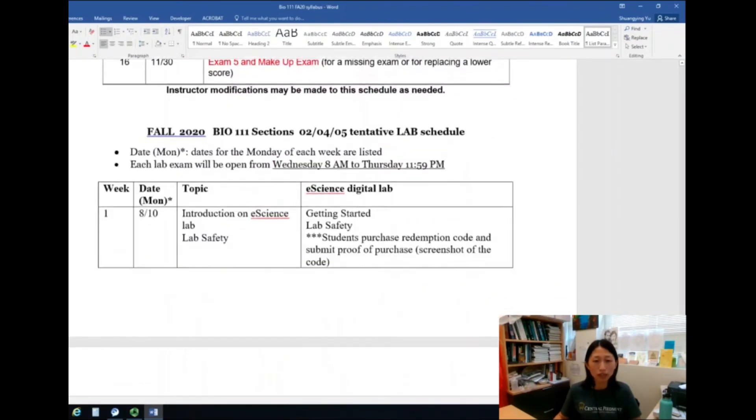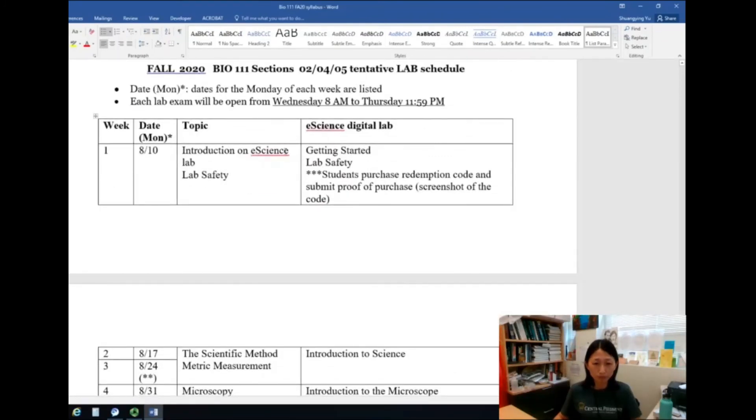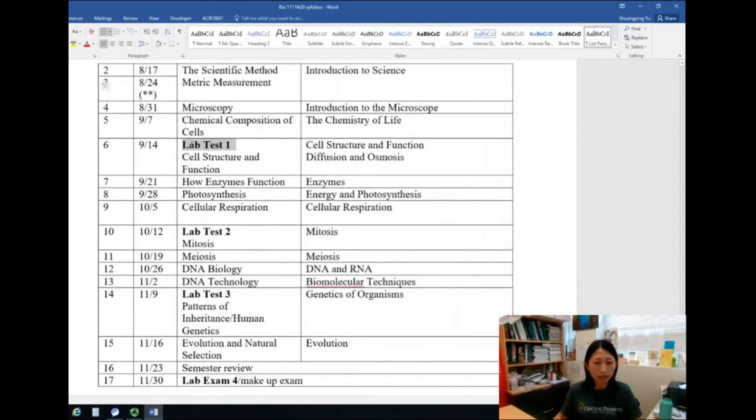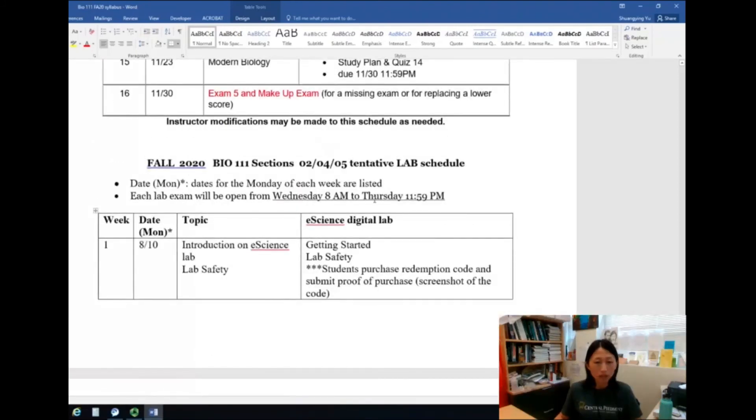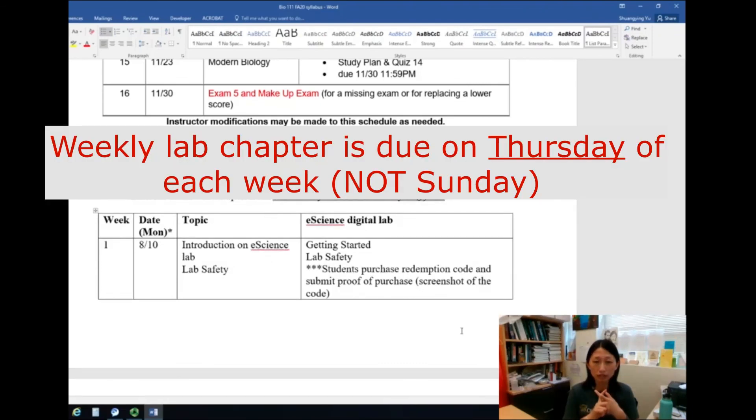So this is lecture. Now we're going to move on to the lab. So this is lab schedule. So similarly, the lab tests are in bold. You can see over here. I should have put them in red. You can do it yourself if you want to. I guess I didn't highlight them in red. So the lab test is also open for two days. So each test will be open from Wednesday a.m. to Thursday 11:59 p.m. So the date is based on when the lab activities are available to you. So for lecture, it goes from Monday to Sunday. But for the lab, it goes from Monday to Thursday. Very important.